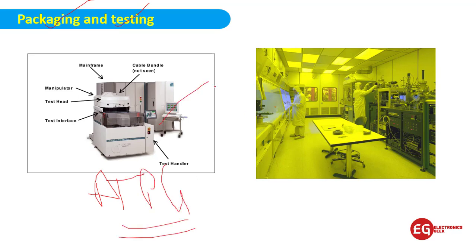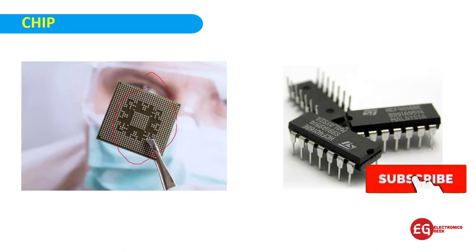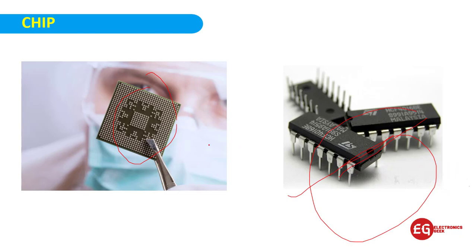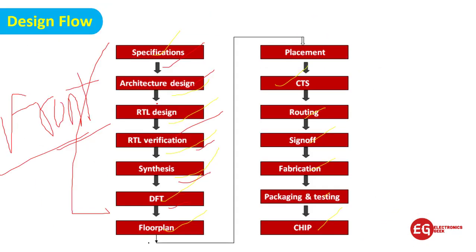Here is the ATPG machine where we can test the IC easily with the help of this machine. Here you can see the test lab where we are testing the IC. In the last, we will be getting the chips. This is the processor you can see, and these are the ICs. At last, it will be in your computer or in your phone.